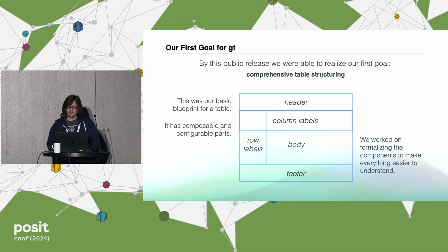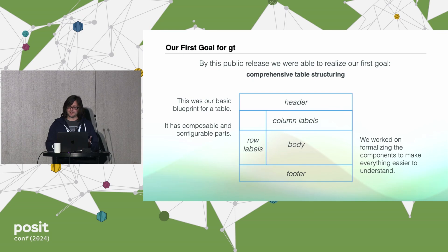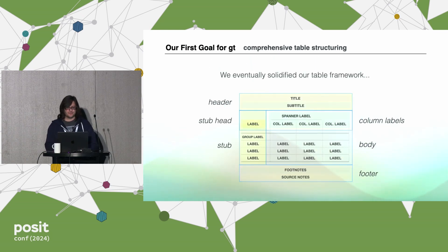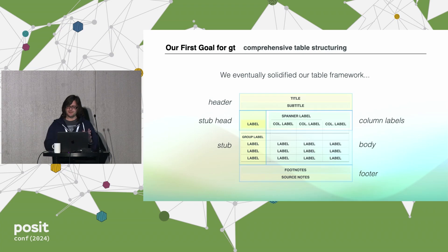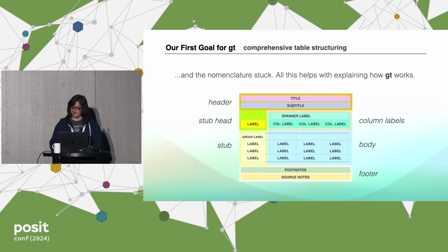Our first goal was pretty much met: comprehensive table structuring. We had a basic blueprint for a table — things like a header, a footer, a place for row labels — making them composable and configurable. We worked on formalizing those components. We solidified our table nomenclature — terms like stub and stubhead. To this day we still use it. It really works quite well, and we use it throughout the documentation to explain how the API works.